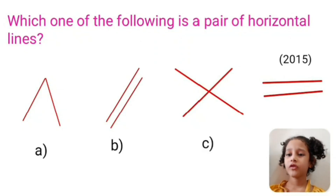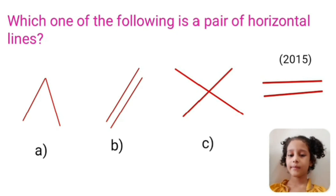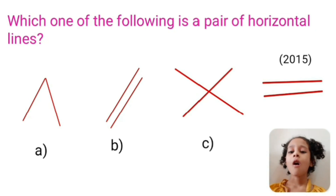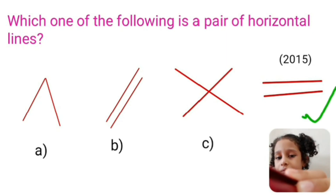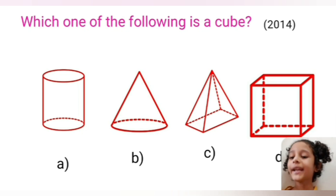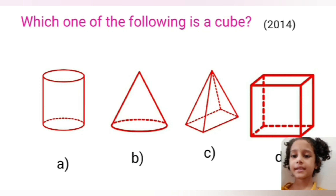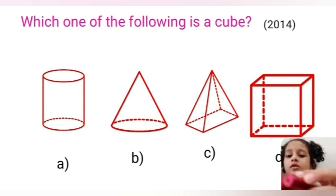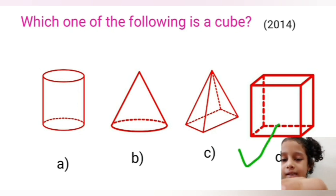Which one of the following is a pair of horizontal lines? In option D, the horizontal line is present, so option D is our correct option. Which one of the following is a cube? Option A is a cylinder, option B is a cone, option C is a pyramid, and option D is a cube. So option D is our correct option.